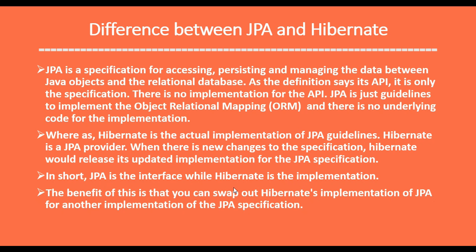In short, JPA is the interface while Hibernate is the implementation. The benefit of this is that you can swap out Hibernate's implementation of JPA for another implementation of the JPA specification. For example, if you are using Hibernate as your ORM tool, you can later replace it with EclipseLink, because JPA provides loose coupling and multiple implementations are available.